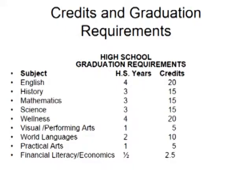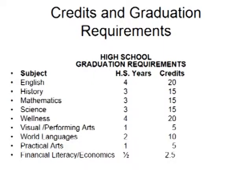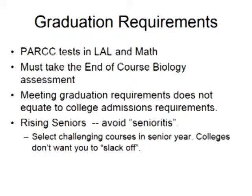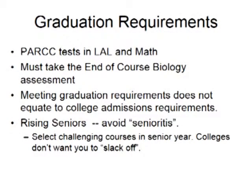Some information about graduation requirements and credits. You'll notice subject areas such as English, History, Math, Science, and others, which show the number of years you have to take the course and the number of credits. Remember, you need 120 credits to graduate. You also need to take the PARC tests in Language Arts and Math, and you must take the end-of-course biology assessment. Meeting your graduation requirements credit-wise doesn't mean it equates to college admissions requirements — you really need to have a rigorous schedule.